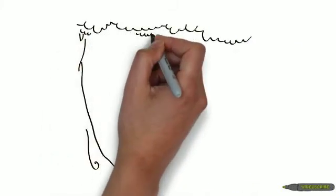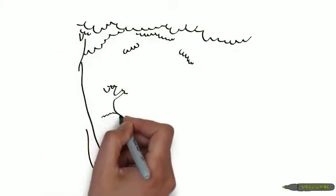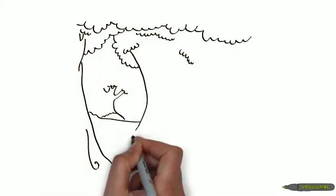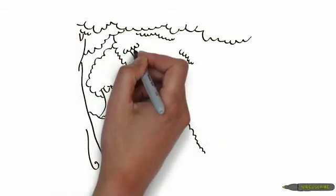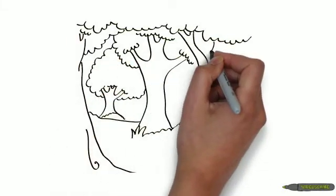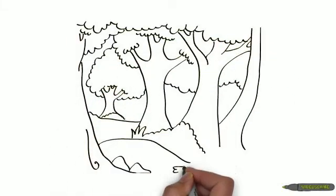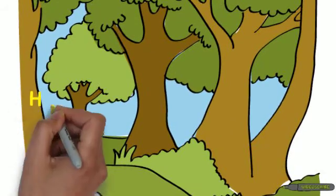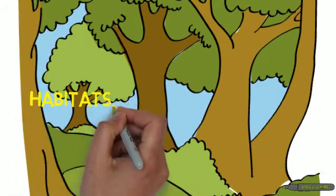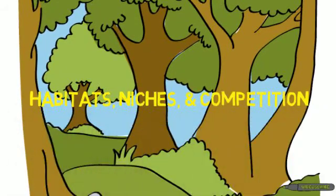We're going to continue with Unit 3 to discuss interdependence, which means how organisms interact with other things in their environment. Today's lesson will focus on habitats, niche — which some people pronounce as 'niche' — and competition.